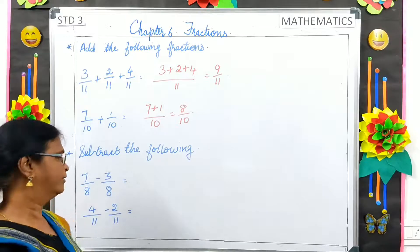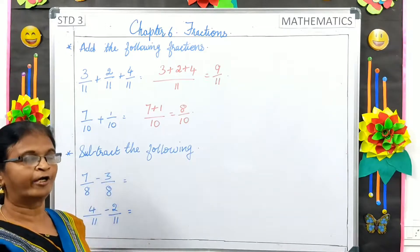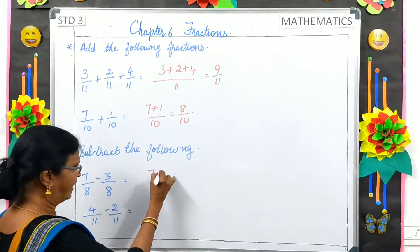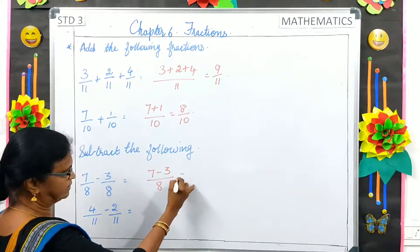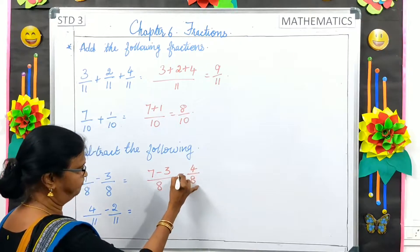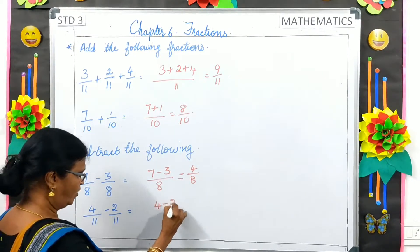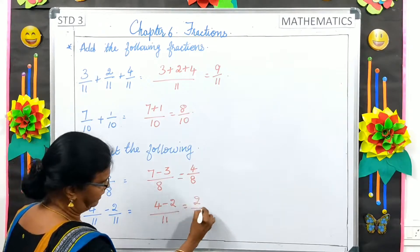Subtract the following. 7 by 8 minus 3 by 8. Here also, the denominators are same, so we minus only the numerators. 7 minus 3 is equal to 4 by 8. 4 minus 2 by 11 is equal to 2 by 11.